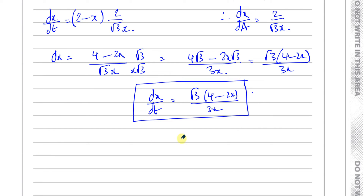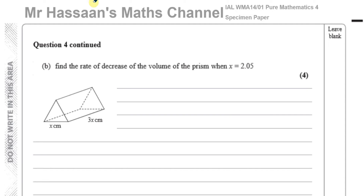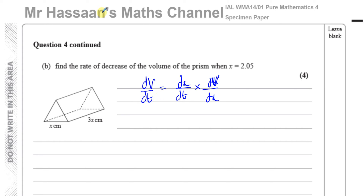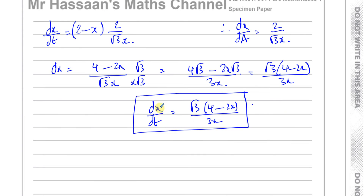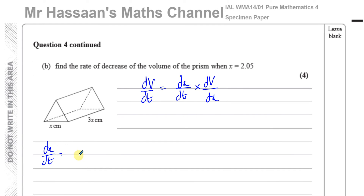Now on to part B. Part B asks us to find the rate of decrease of the volume of the prism when x equals 2.05, so we need to find dV/dt. We already know dx/dt, which is root 3 times (4 minus 2x) over 3x. To get dV/dt, I multiply dx/dt by dV/dx, since that leaves me with dV/dt. So I need to find dV/dx.